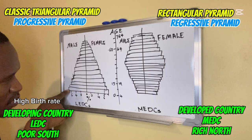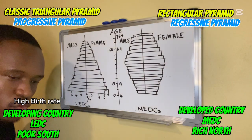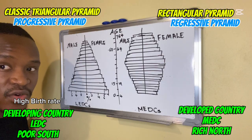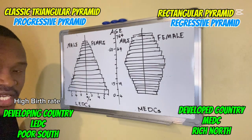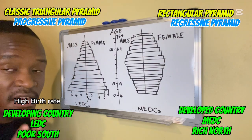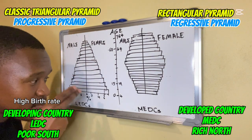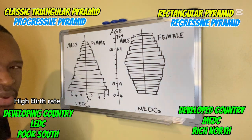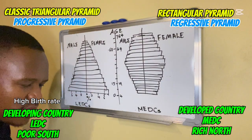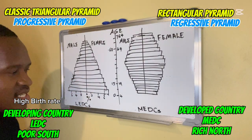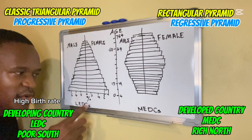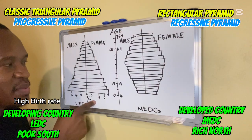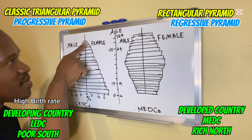In poor countries there is less women empowerment. When women are empowered they make their own decisions and choose to have fewer babies to focus on their careers. In developing countries there is less women empowerment and more unemployment, both of which are associated with a high birth rate.